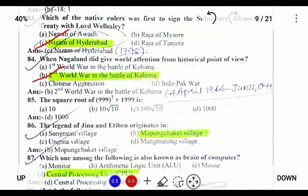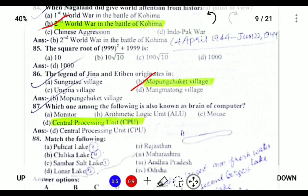The legend of Jina and Edipan is in Ungma village, which is located in Mokokchung district. Which one of the following is known as the brain of the computer? The Central Processing Unit (CPU) is also known as the brain of the computer.